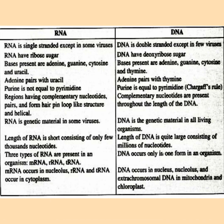What are the differences between RNA and DNA? RNA is single-stranded except in some viruses, whereas DNA is double-stranded except in a few viruses. RNA has ribosugar; DNA has deoxyribosugar. Bases in RNA are adenine, guanine, cytosine and uracil, whereas bases in DNA are adenine, guanine, cytosine and thymine. In RNA, adenine pairs with uracil; in DNA, adenine pairs with thymine.